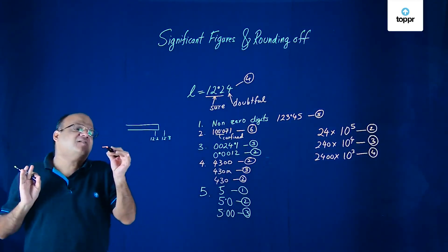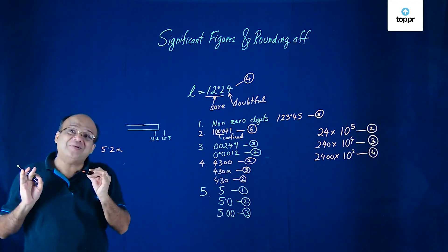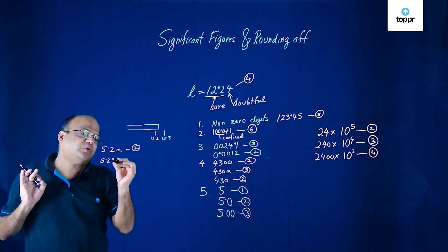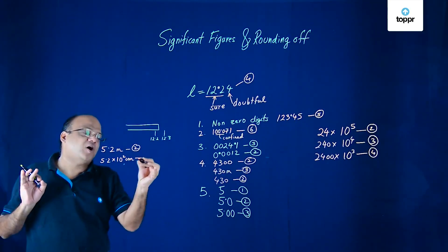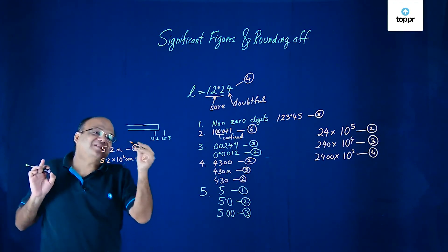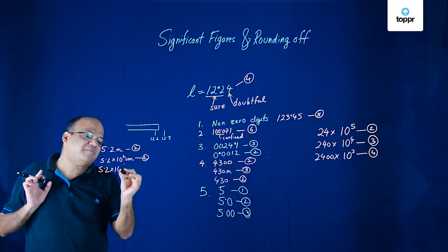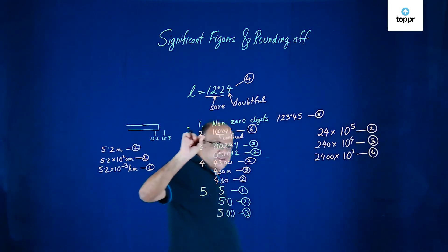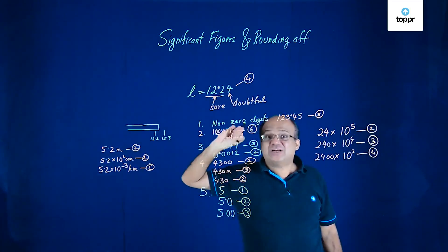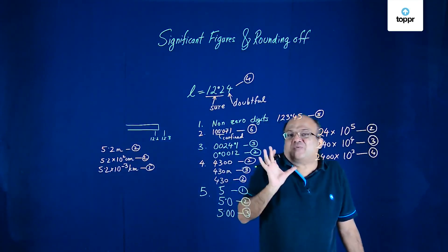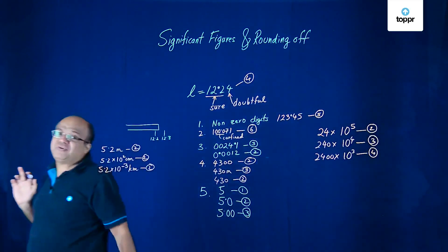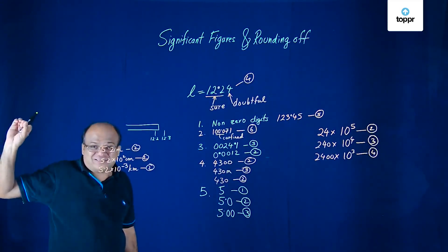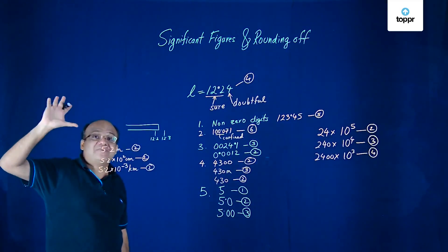Another important point: change of units does not change the number of significant digits. Suppose some reading is 5.2 meters — that has two significant digits. Write this in centimeters: 5.2 × 10² cm — still two significant digits. Write in kilometers: 5.2 × 10⁻³ km — again two significant digits. Change of units does not change the number of significant digits because the measurement does not become more accurate by changing the units.